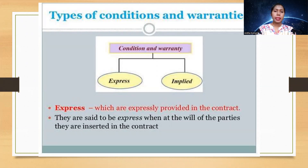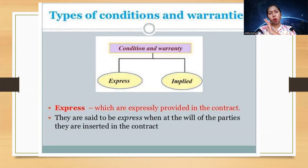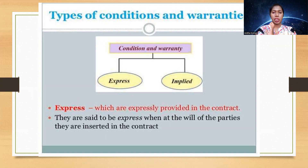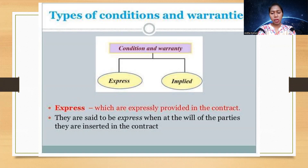Now, types of conditions and warranties. There are two types: express and implied. Express conditions and warranties are those which are expressly provided in the contract — they are said to be express when both parties agree to them at the time of entering the contract. From the seller's point of view, clear instructions about the condition, usage, handling, and demo of the product will be given. That is why, when you buy a home appliance, demo persons come and explain what to do and what not to do.